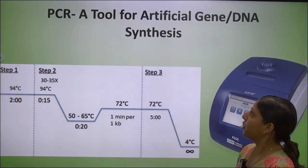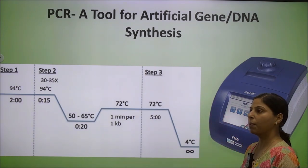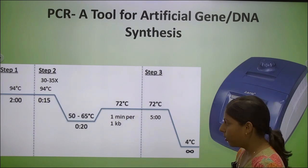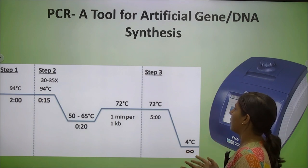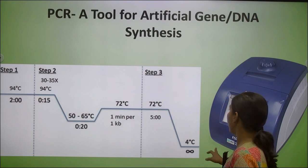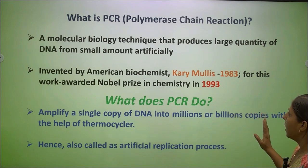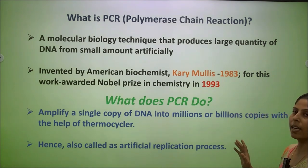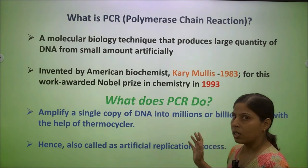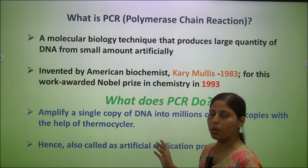As mentioned, PCR is an artificial gene or DNA synthesis, meaning the process takes place outside the human body. It is also called in vitro artificial synthesis. Inside our body, DNA replication is continuously ongoing. PCR is the most powerful molecular biology technique that produces large quantities of DNA from a small quantity of DNA. It was invented by Kary Mullis in 1983.